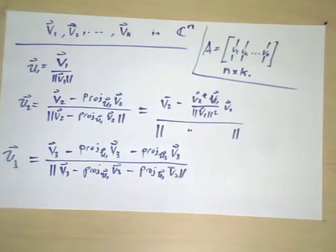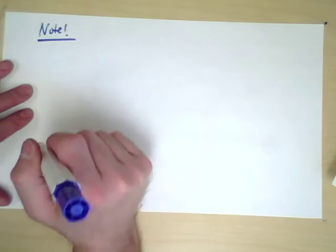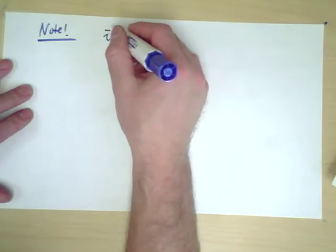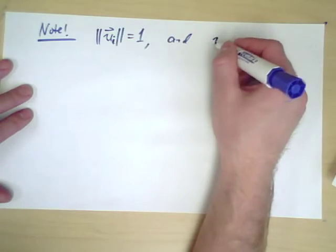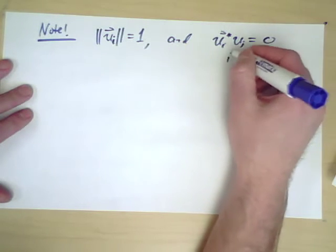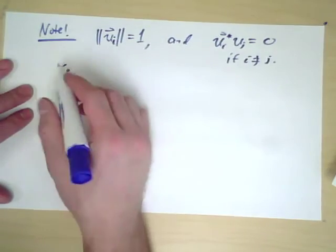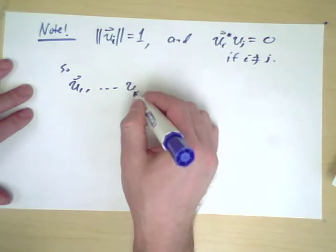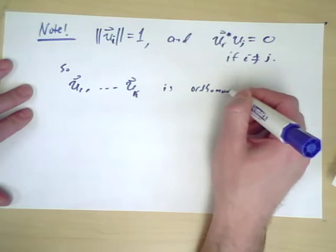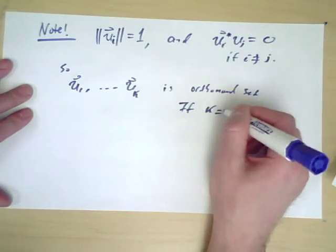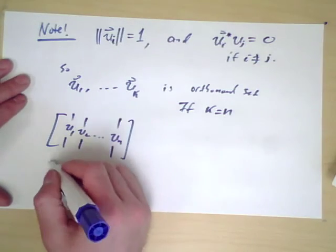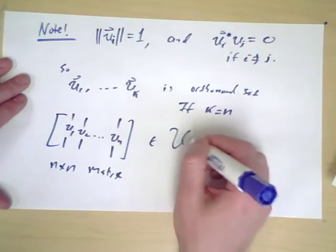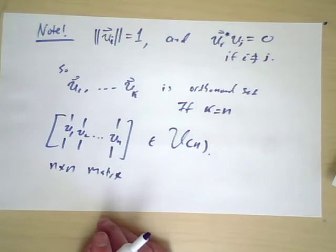Okay, so there's one more thing to say. It's easy to check, given this structure, that note: this is constructed so that each Ui has length 1. And it's constructed recursively in fact, so that Ui star Uj is 0 if i is not equal to j. So the new Us that we obtain this way sequentially, U1, U2, up to Uk, is an orthogonal set. It's an orthonormal set. If k equals n, then this is actually... this gives us a square matrix. So in fact, we're working with n vectors. This is an n by n matrix. This is a unitary matrix.